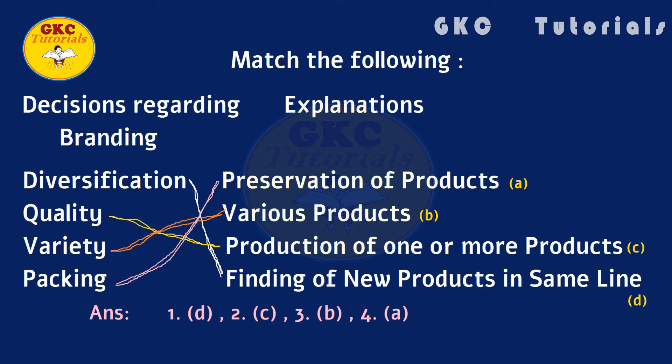Match the following: Decisions regarding branding, diversification, quality, variety, packing — with explanations: preservation of products, various products, production of one or more products, finding of new products in same line. Correct matching: diversification — finding of new products in same line; quality — production of one or more products; variety — various products; packing — preservation of products.